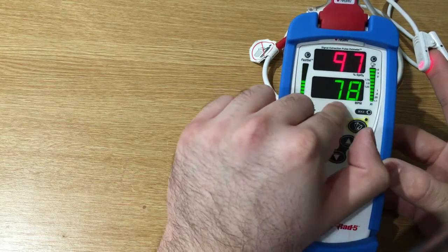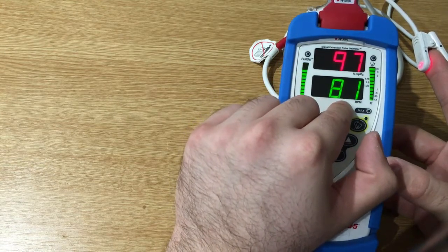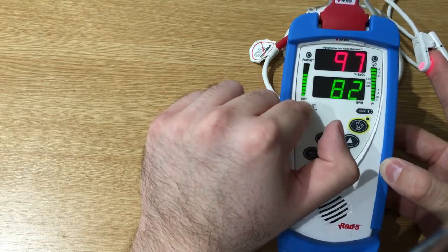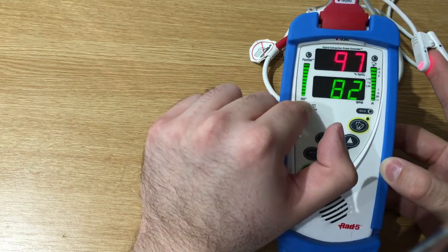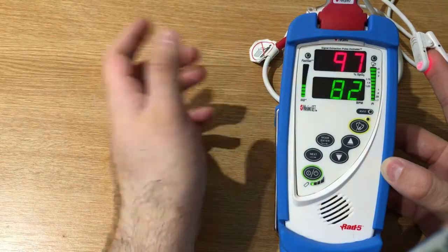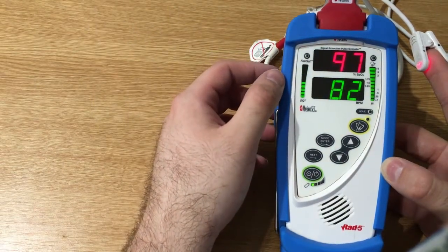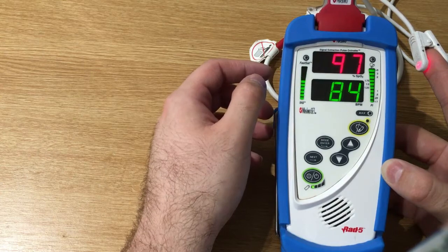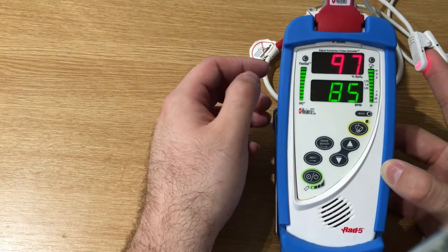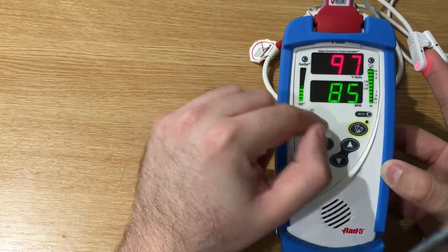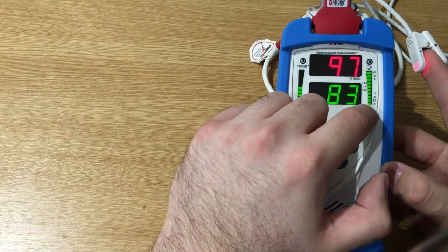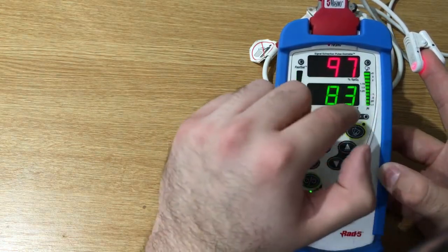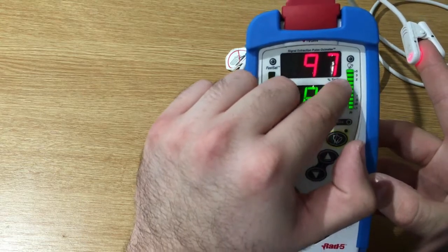It's pretty quick to pick up a reading. As you can see, the top display is for the SP02, the bottom one is for the heart rate. Here we have the signal IQ indicator. So when the signal is very low and SP02 and pulse rate values are not very accurate, the LED turns red. Here we have the pulse index indicator, and as you can see there are the values on the side.